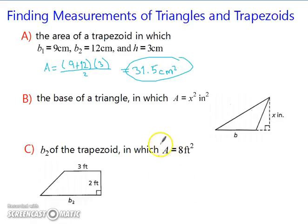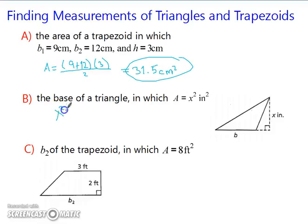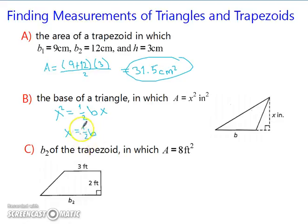Take a moment and pause the video and try parts b and c. Now let's try them together. We have our area which is x squared and we want to find the base. So we have x squared equals one-half times base times height, and the height given is x. Dividing both sides by x, we get x equals one-half times base. Multiplying both sides by 2, we get 2x equals the base — so your base is 2x inches.